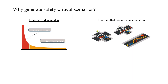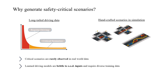The distribution of driving situations is extremely long-tailed and critical scenarios are rarely observed in real-world data. As a consequence, they are usually underrepresented in common driving datasets. This is a problem in particular for learned end-to-end driving models, which are brittle to out-of-distribution inputs and require diverse and dense coverage of all possible situations in their training data.